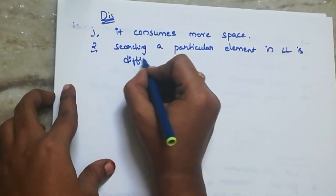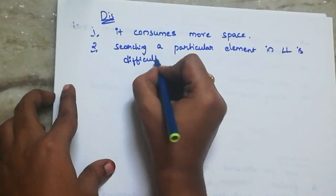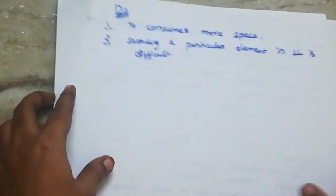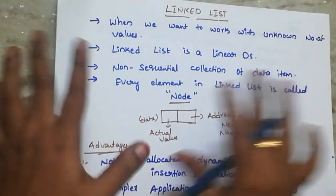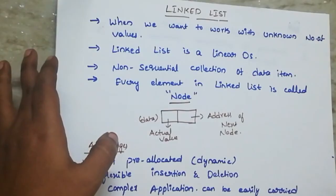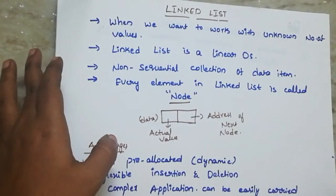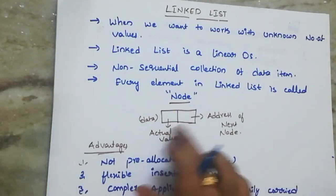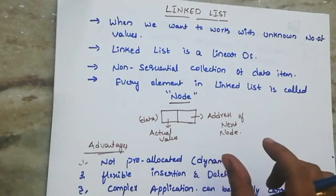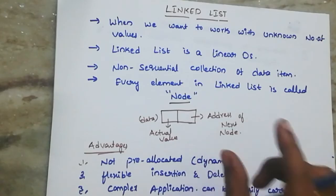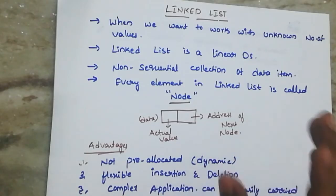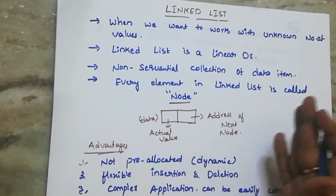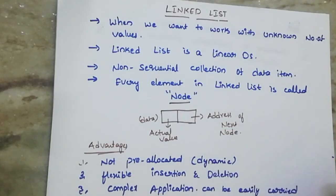So here are the two disadvantages and advantages of linked list. Finally, a node has a first part storing the element and a second part storing the address of the next node.